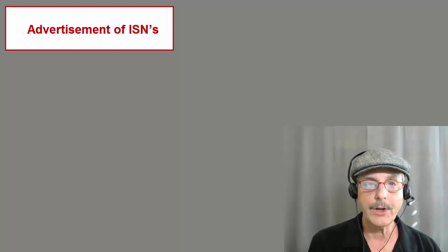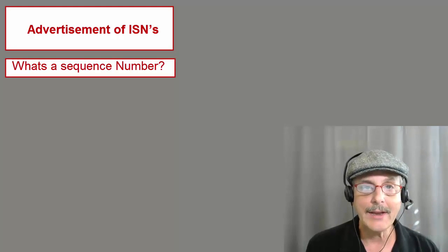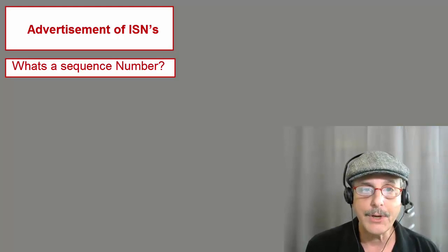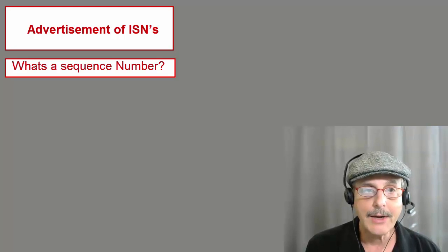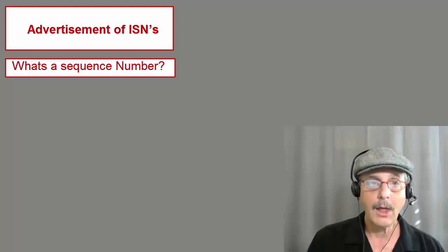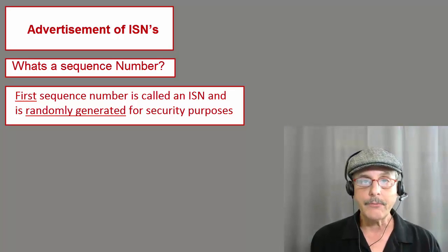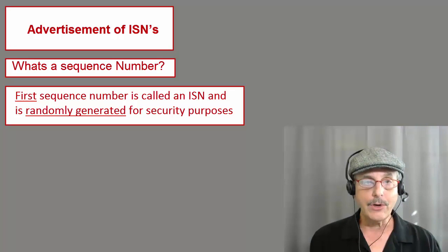We go to the next function of the three-way handshake, which is advertisement of ISNs. ISN stands for initial sequence number. But before we can understand what an initial sequence number is, we need to understand the concept of what any sequence number is in general. TCP numbers all data bytes that are transmitted during a connection, and TCP keeps track of the sequence number to maintain its reliability. However, the first sequence number is called an ISN — initial sequence number — and is randomly generated for security purposes.